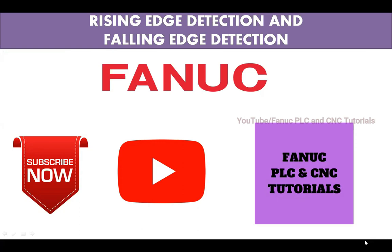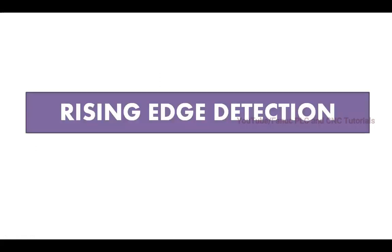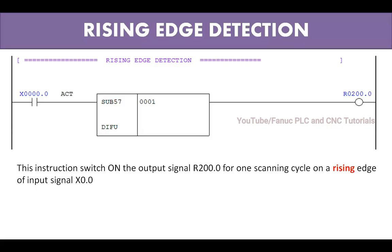So in PLC there are many cycles — cycle one, cycle two, cycle three, up to unlimited cycles. You can see this is a high value and this is a low value, high value and low value, like pulses. So first I will show you rising edge detection.